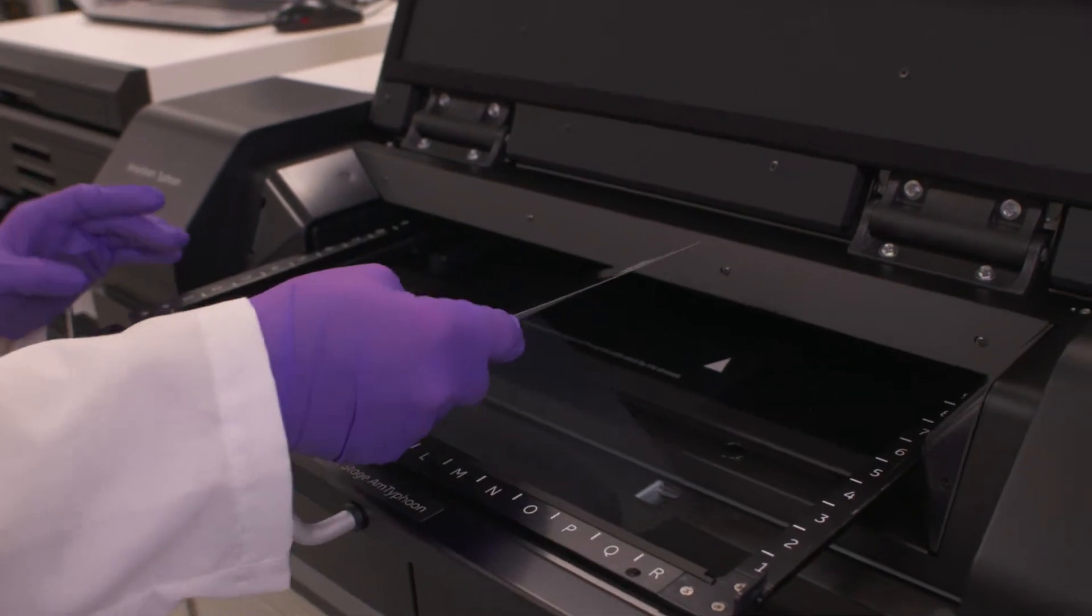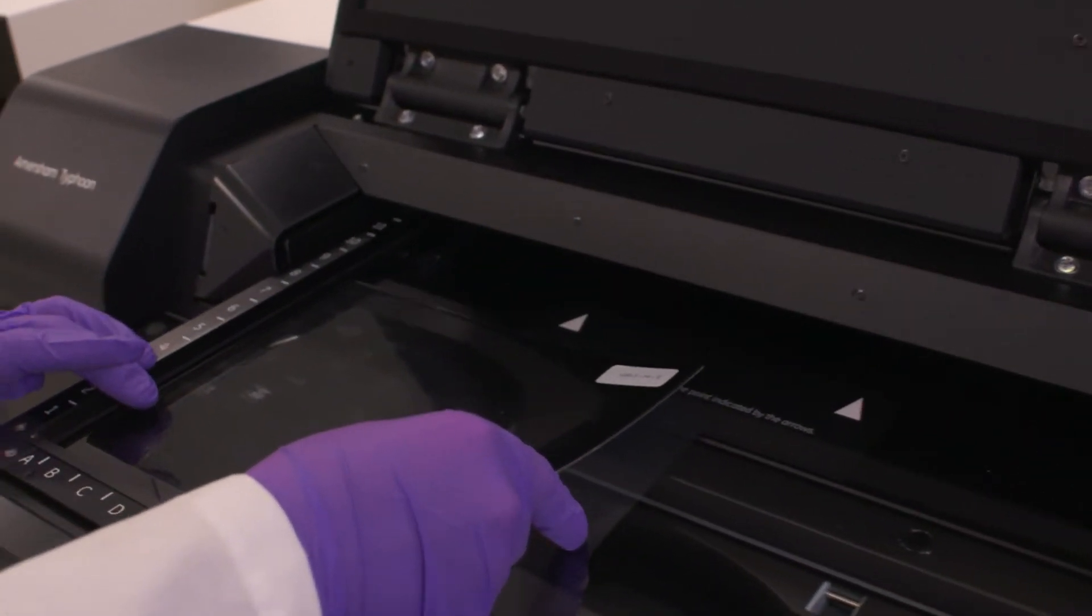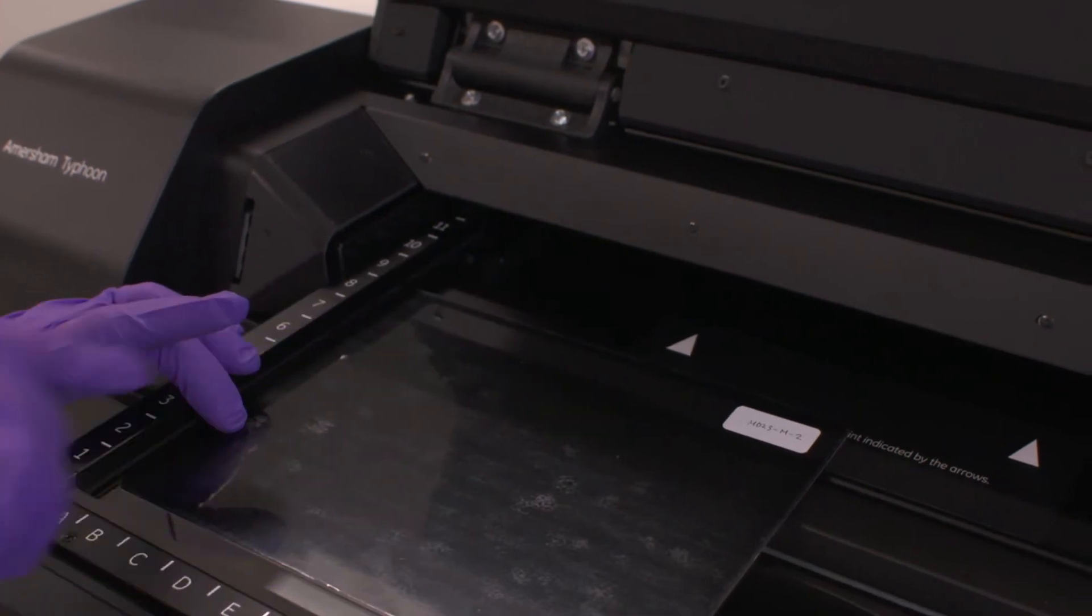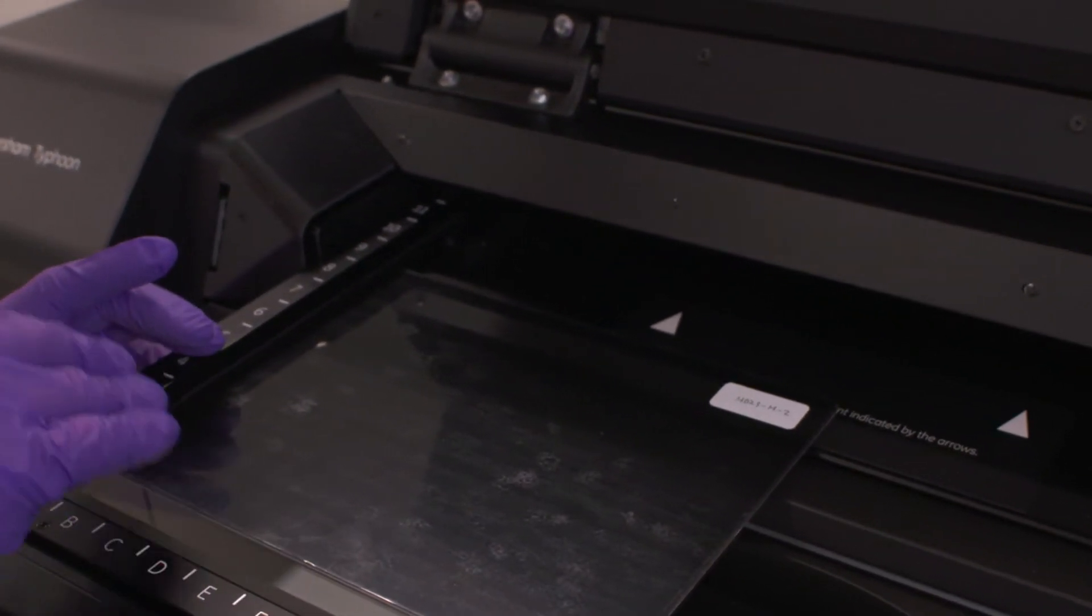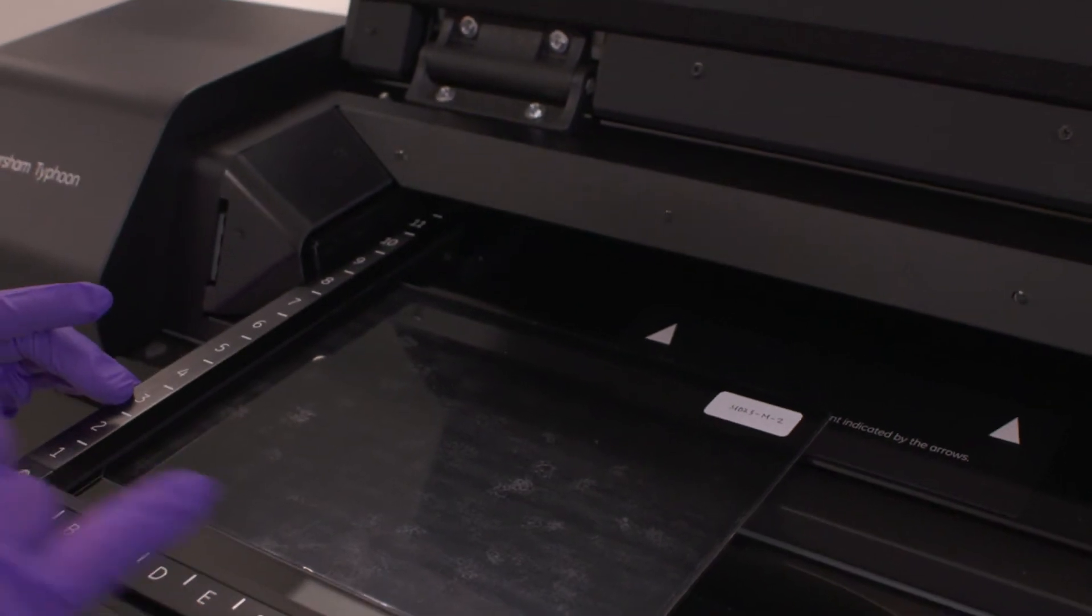When you place our screen into the instrument, it's now going to be very important that we remember the dimensions that we're going to use to set up in the control software. So in this case, I'm going to go from 2 to 9, and I'm going to go from A to J.